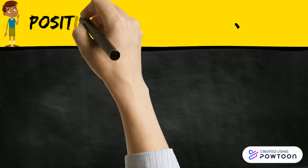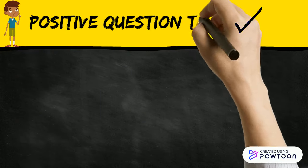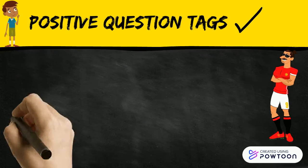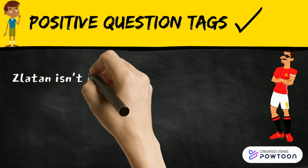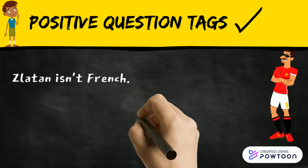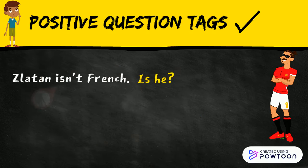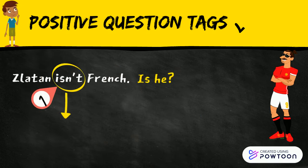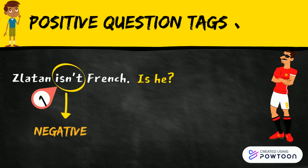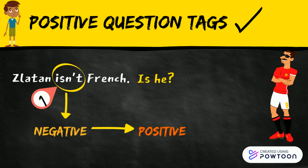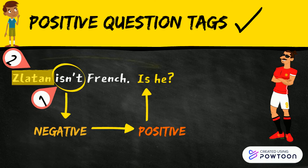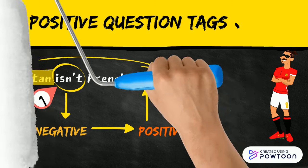But when the statement is negative, we make a positive tag question. An example is: 'Zlatan isn't French, is he?' We change the auxiliary 'to be' from negative to the positive form — 'is' — and then add the subject pronoun 'he'.